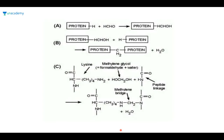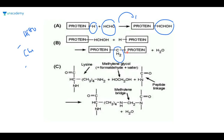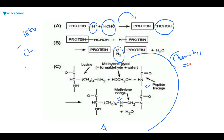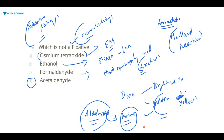When formaldehyde reacts with a protein (HC=O group), it forms an aldimine linkage. This aldimine linkage is capable of causing peptide linkages and methylene groups — this is the chemistry behind fixation. The best fixative is formaldehyde. Acetaldehyde is never involved in fixation. Osmium tetroxide works in EM, ethanol has fixative action, formaldehyde is the best fixative, but acetaldehyde is not a fixative. If the extra statement about cross-linking is added, the best fixative is still formaldehyde; the answer to choose as 'never a fixative' is acetaldehyde.